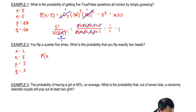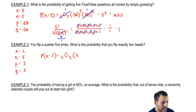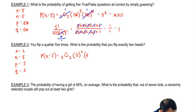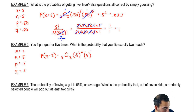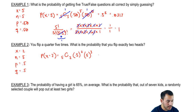The probability that x equals 2: we're flipping it five times, combination, we want two successes or two heads. Times 0.5 to the power of the number of successes, which is two. That means we have three failures — if we flipped heads twice out of five coins, three are going to be tails. So 5C2 gives us 10.